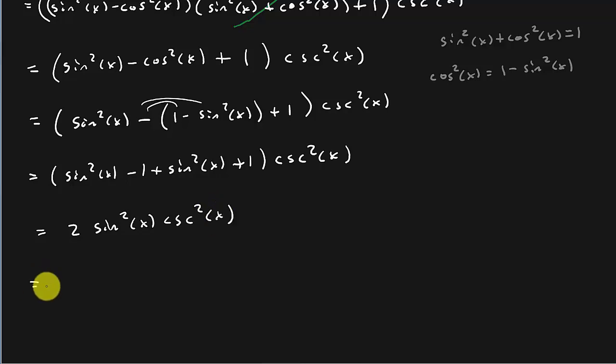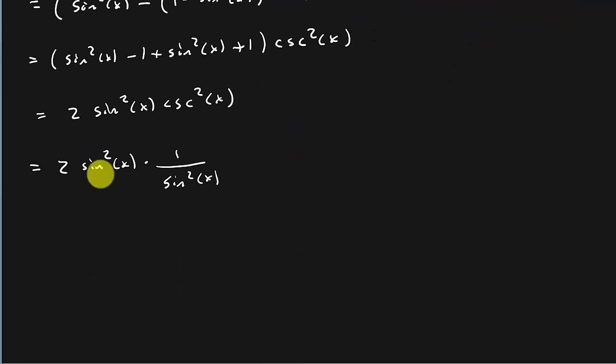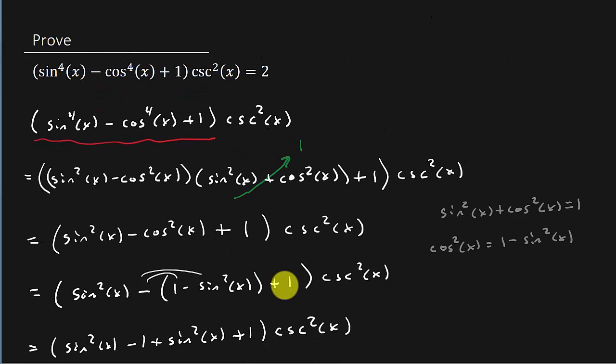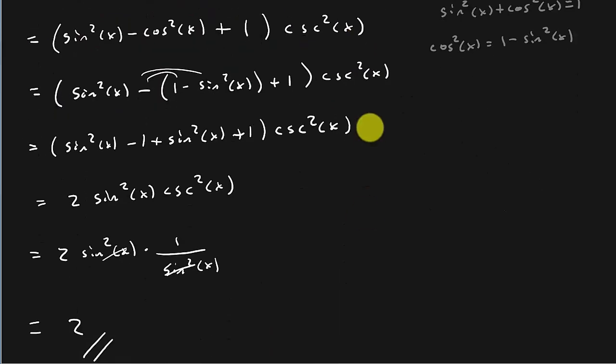Which that's equal to 2 times sine squared x times 1 over sine squared x, and the sine squared x is cancelled and I'm left with a 2, which is the right hand side.